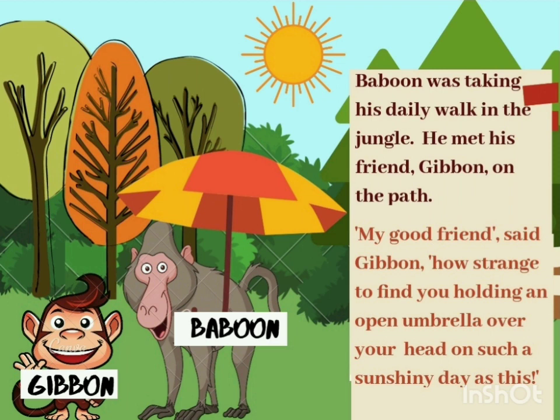Baboon was taking his daily walk in the jungle. He met his friend Gibbon in the park. My good friend, said Gibbon, how strange to find you holding an open umbrella over your head on such a sunshiny day as this. So children, two animal characters are there — Baboon and Gibbon. Can you see in this picture what Baboon was holding in his hand? He was holding an umbrella. Gibbon is seeing this and he said, how strange to find you holding an open umbrella on such a sunshiny day.